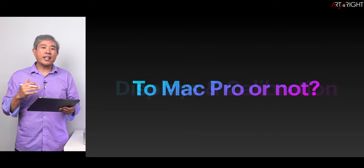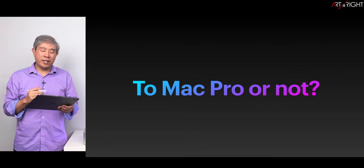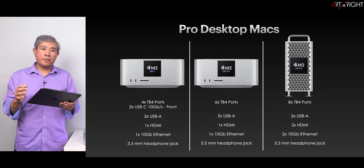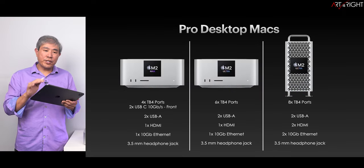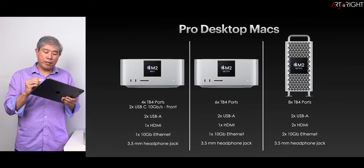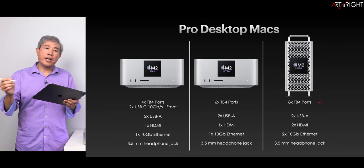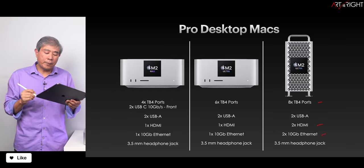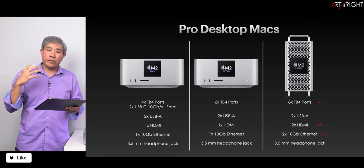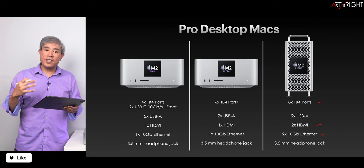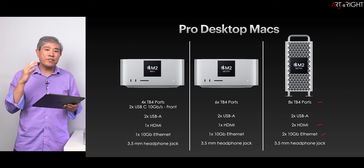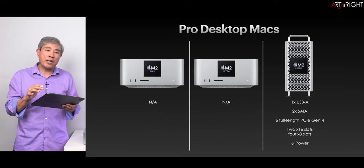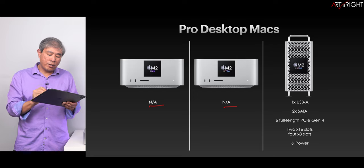The question to really ask yourself is: Mac Pro or not Mac Pro? If you take a look at just the ports on the machine, going from the Ultra Studio to the Ultra Pro, what you're really getting is two extra Thunderbolt ports, dual HDMI, and dual 10 Gigabit Ethernet. If these are the things you need in your workflow, it's definitely something to consider — in addition to the internal expansion that you do not get with the Studio.